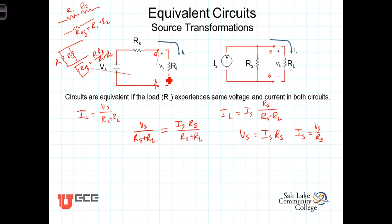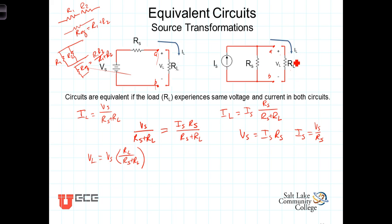Now let's look at the voltage that the load resistance would experience in both situations. Using a voltage divider on the left-hand side, V_L equals V_S times R_L over R_S plus R_L. In the parallel case on the right, we determine the voltage across the load resistor by taking the current we just calculated and multiplying it by R_L: V_L equals I_S times R_S over R_S plus R_L, multiplied by R_L.